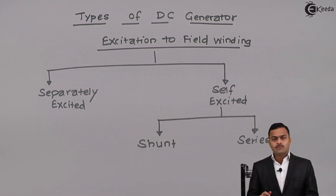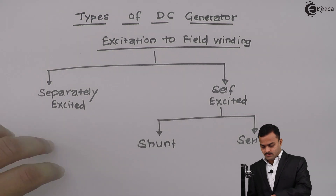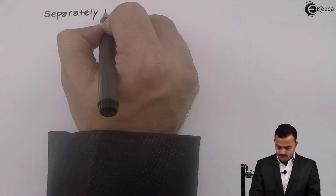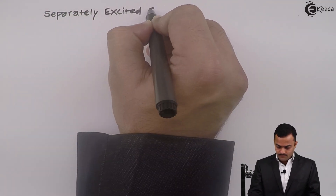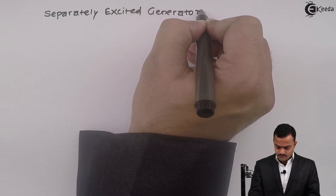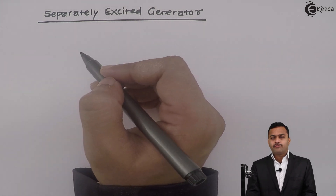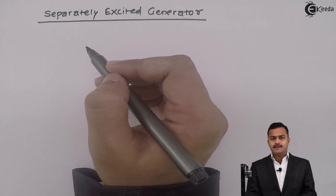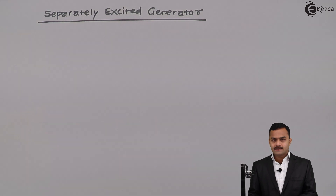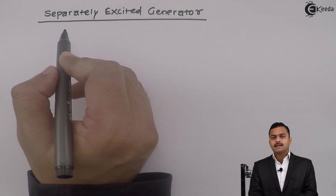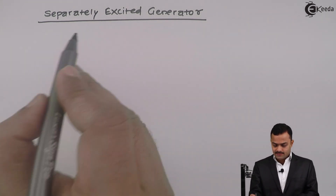So let's see this one by one. Separately excited generator. As the name suggests, we have a different DC supply given to the field winding, and from the armature we are taking the voltage out. So the circuit diagram of a separately excited generator will be like this.